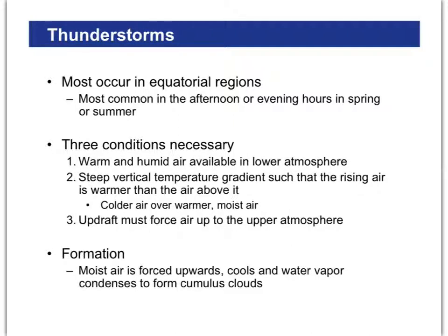Thunderstorms — and you should have a diagram in your notes with three thunderstorm stages. Thunderstorms usually occur in regions that are warm, especially in the equatorial regions. At the equator it's warm, so air is rising, and we have the equatorial low pressure zone. When air rises, it condenses, and if it rises quickly enough, it turns into a thunderstorm and condenses into a pretty substantial downpour. You need warm, humid air available to rise, and some sort of temperature change so that when the air rises, it cools substantially and condenses a lot all at once.